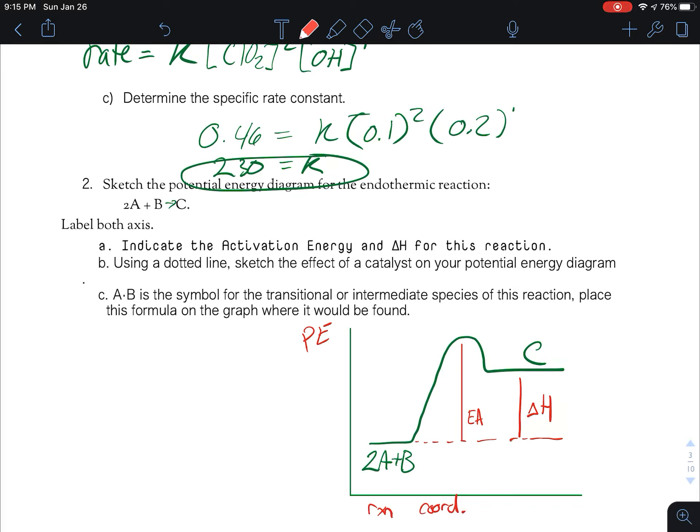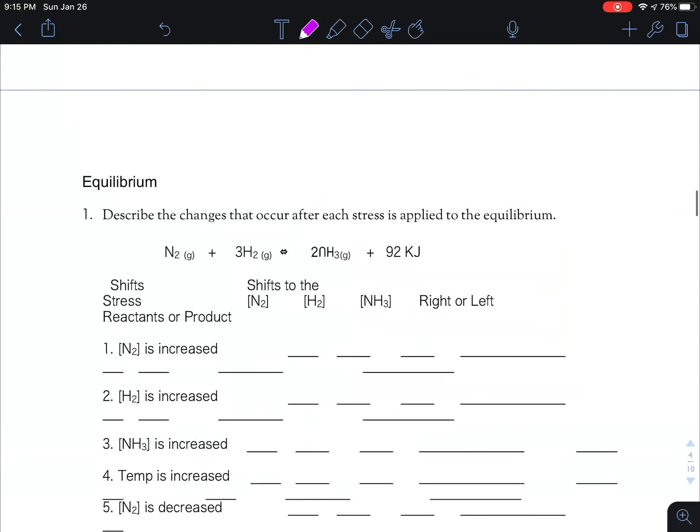Okay, using a dotted line, sketch the effect of a catalyst on your potential energy diagram. So sketching a catalyst means that we are probably going to be reducing the activation energy, although the delta h stays the same. A dot b is the symbol for the transitional or intermediate species. Place it on the graph where you would find it. So that would be the transitional species, the one that is equally able to convert into the product or the reactant. So we place it up there. All right, all done.